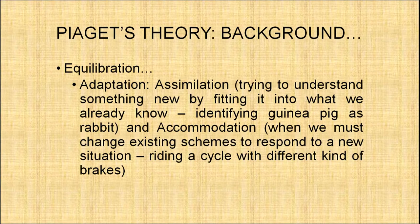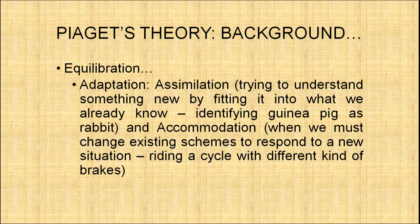Adaptation includes two things: assimilation and accommodation. Assimilation means trying to understand something new by fitting it into what we already know. For example, when a child first sees a guinea pig, since it resembles a rabbit and the child already has a scheme for recognizing rabbits, the child first thinks it is a rabbit. This is assimilation — understanding something new by fitting it into an existing scheme.